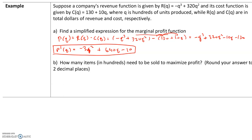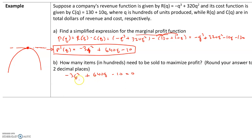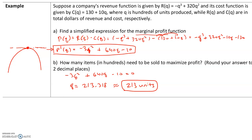Part B: find how many items in hundreds need to be sold to maximize profit. Maximum profit occurs when the slope of the tangent line is zero, so we set p prime of q equal to zero: negative 3q squared plus 640q minus 10 equals zero. I recommend graphing it to find where it hits the x-axis. q is approximately 213.318, so approximately 213 units.